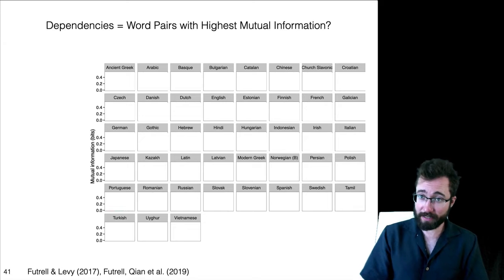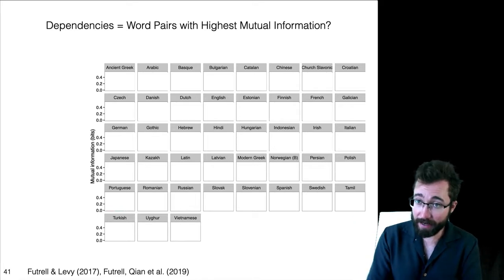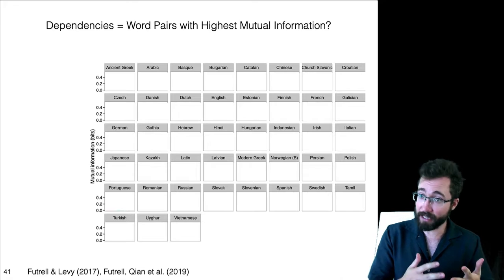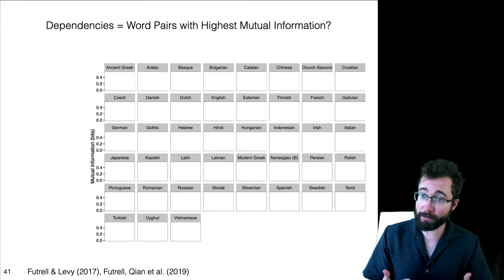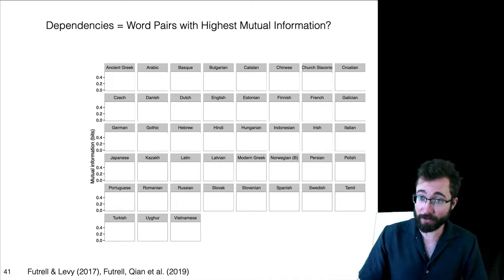So the first thing that we want to show is that it is indeed true that those word pairs and syntactic dependencies are distinguished by high mutual information. If that's true, then we can see dependency locality as a kind of approximation to information locality, or as a kind of information locality effect.